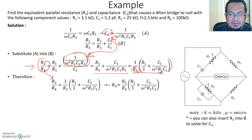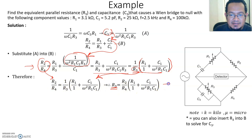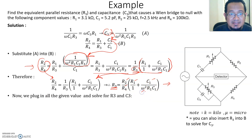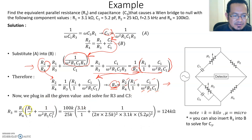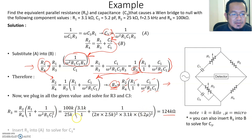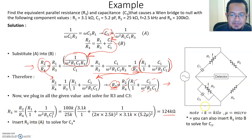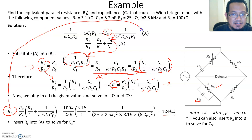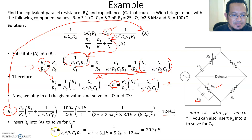Further simplifying by factoring out R3, we can relate R2/R4 to the expression and then solve for R3. Bringing R4 down and R3 up, we isolate R3. Now plugging in all the given values — R2, R4, R1, C1, and omega (frequency is also given) — we calculate the final value for R3. To find capacitance C3, insert the calculated R3 value back into equation A and solve for C3.